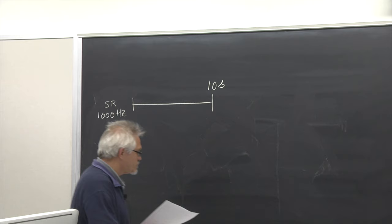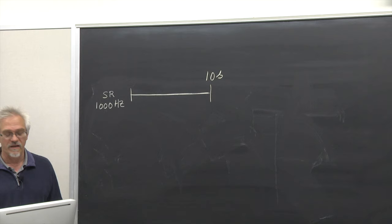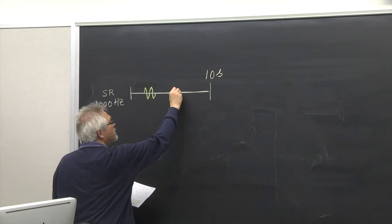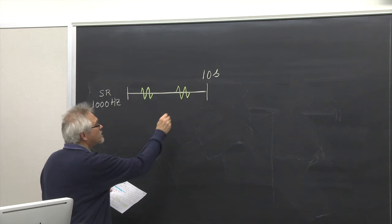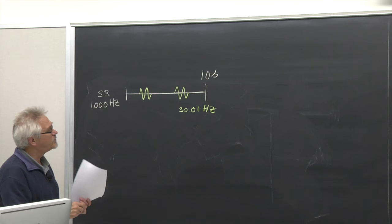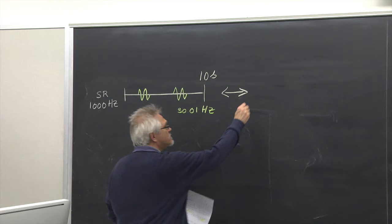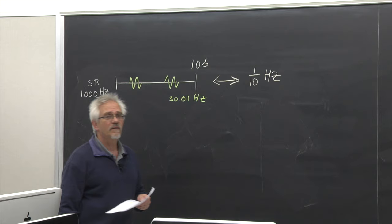Let us assume that we have — which is a little bit violating the idea of a Fourier transform of stationarity — a burst of a wave here and there. And that wave is 30.01 Hertz. If I do a Fourier transform of this whole thing, I will get a power spectrum that has a resolution of 1 over 10, so 1 tenth of a Hertz, and I'm going to have the power spectrum up to the Nyquist frequency, so up to 500 Hertz.